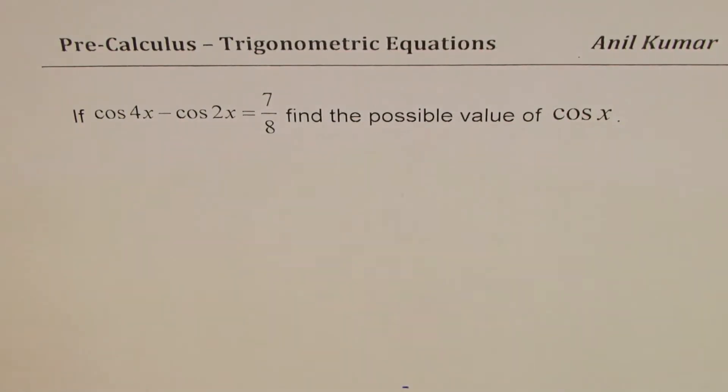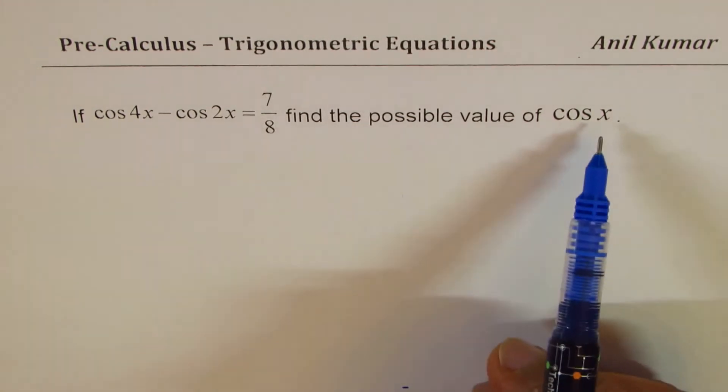I am Anil Kumar sharing with you a question from my subscriber on trigonometric equations. If cos 4x minus cos 2x equals 7 over 8, find the possible value of cos x.